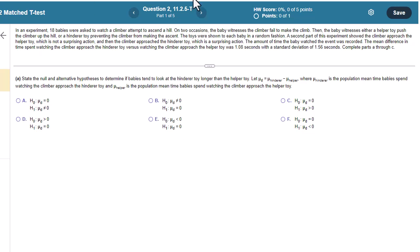The mean difference time spent watching the climber approach the hinderer toy versus watching the climber approach the helper toy was about 1.08 seconds, with a standard deviation of 1.56 seconds. Complete parts A through C.